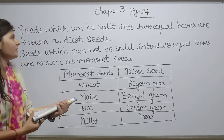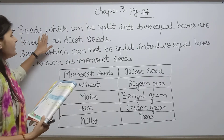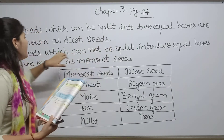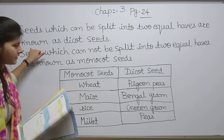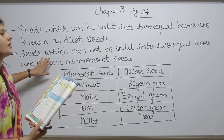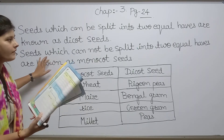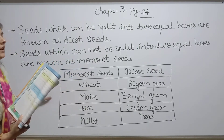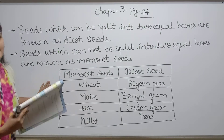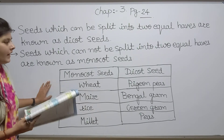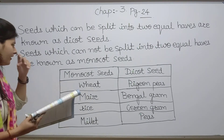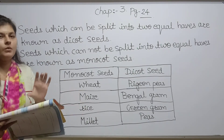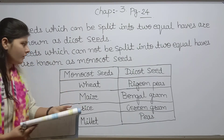So as we discussed, seeds which can be split into two equal halves are known as dicot seeds. We are here discussing the examples of monocot and dicot as we discussed earlier, but at that time we had not given the particular definition of monocot and dicot.